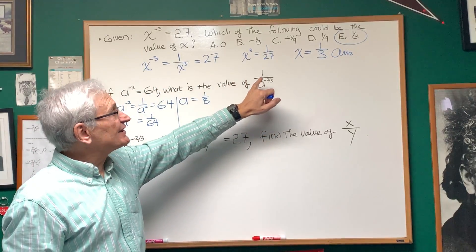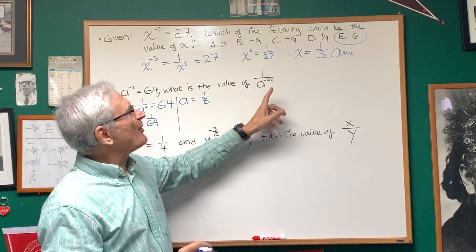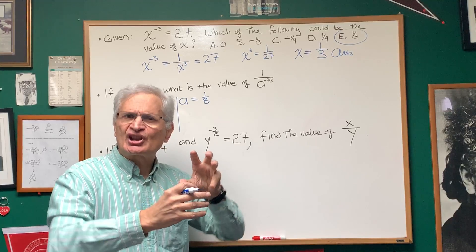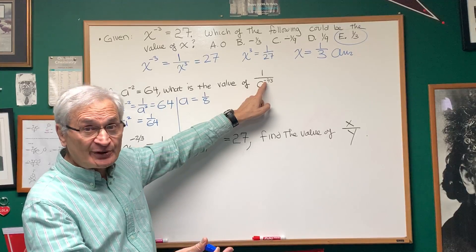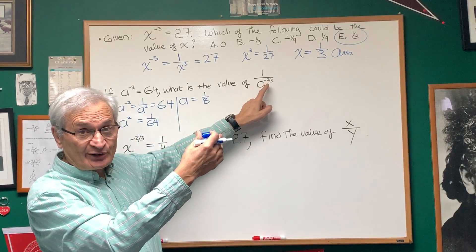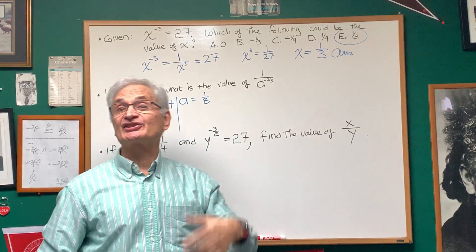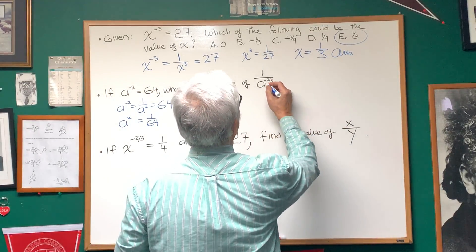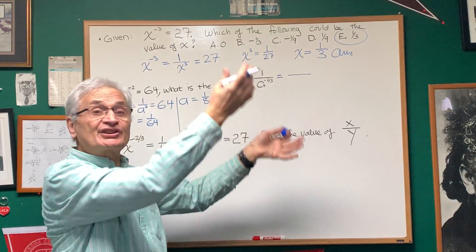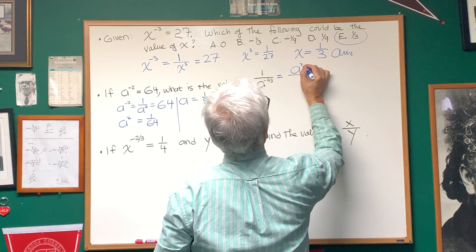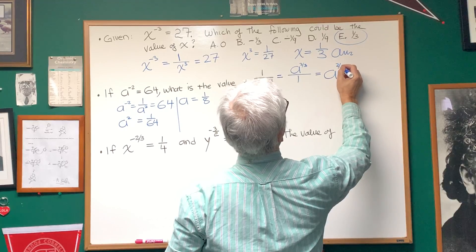Now we're ready for the second part: what is the value of one over a to the minus two thirds? In the exponent we have a lot of instructions compressed into the expression negative two thirds. The negative means take the reciprocal. The two in the numerator of the exponent means take it to the second power. The three in the denominator says take the third root. So one over a to the negative two thirds — taking the reciprocal brings it up to the numerator as a to the positive two thirds.